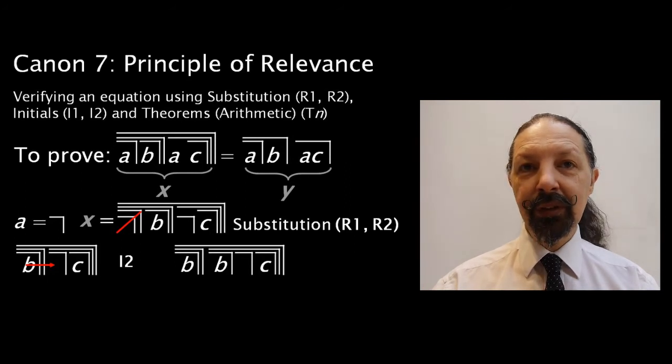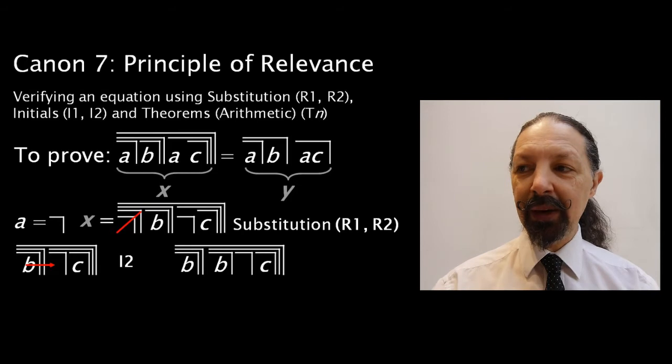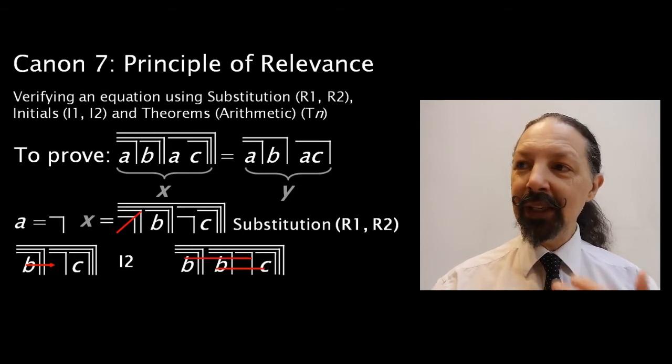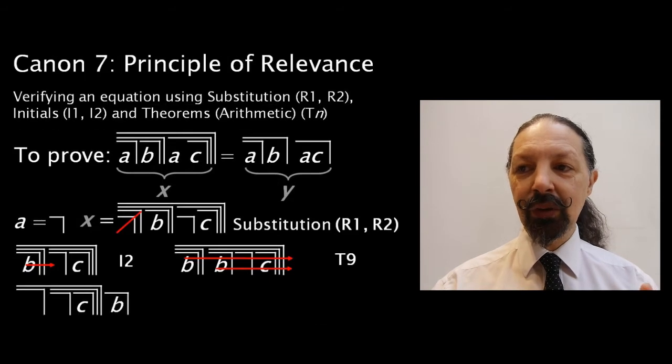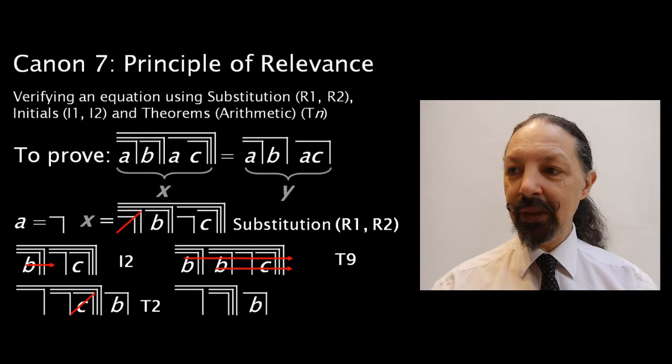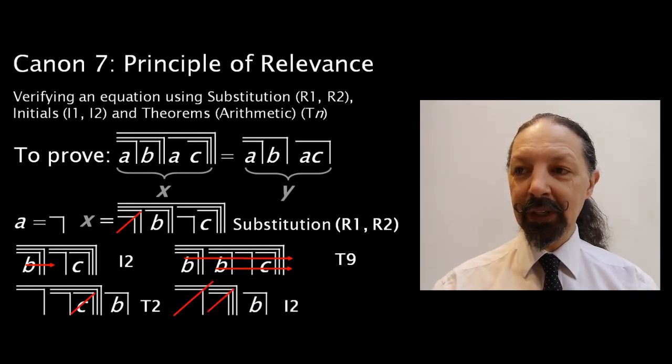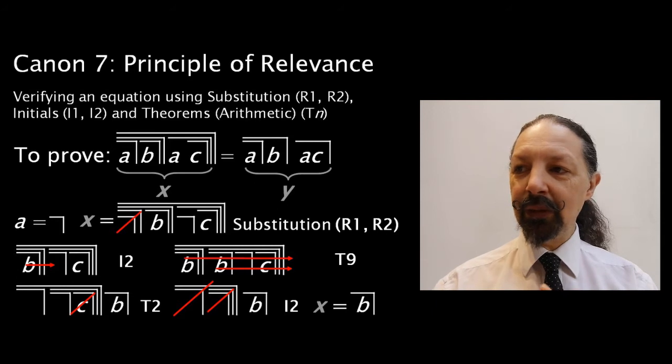So our expression looks like this now. This allows us to see that there are two divisions with a common mark, and we can apply, in this case, T9, which is exactly the same as J2. And we get this expression. Anything next to an empty mark gets cancelled. And so, by this theorem, the expression looks like this. We cancel by I2, which looks like this twice, and we're left with a B mark. So when A is a marked state, X equals B mark.